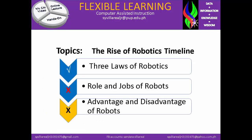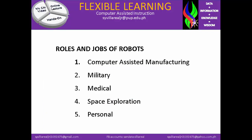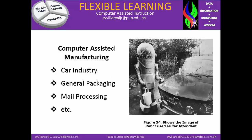Now let's move on to the role and jobs of robots. The role and jobs of robots are considered to be named in five: number 1, Computer Assisted Manufacturing; number 2, Military; number 3, Medical; number 4, Space Exploration; and number 5, Personnel. Figure 34 shows the image of a robot used as a car attendant. Computer Assisted Manufacturing identifies things such as the car industry, general packaging, mail processing, etc.